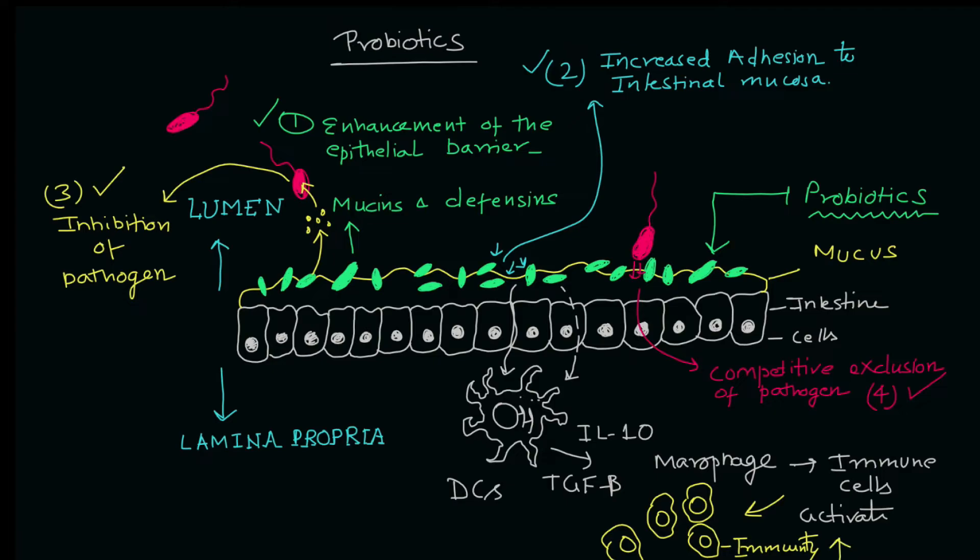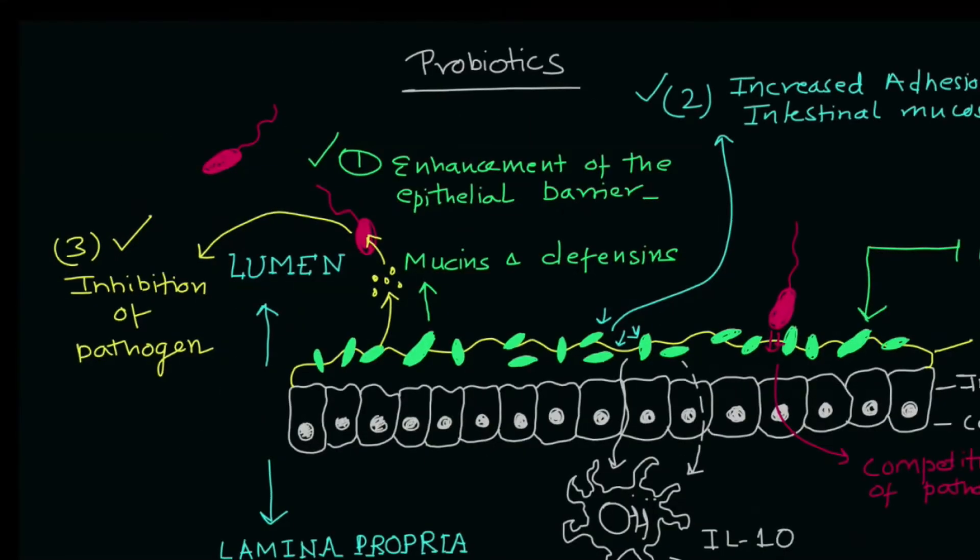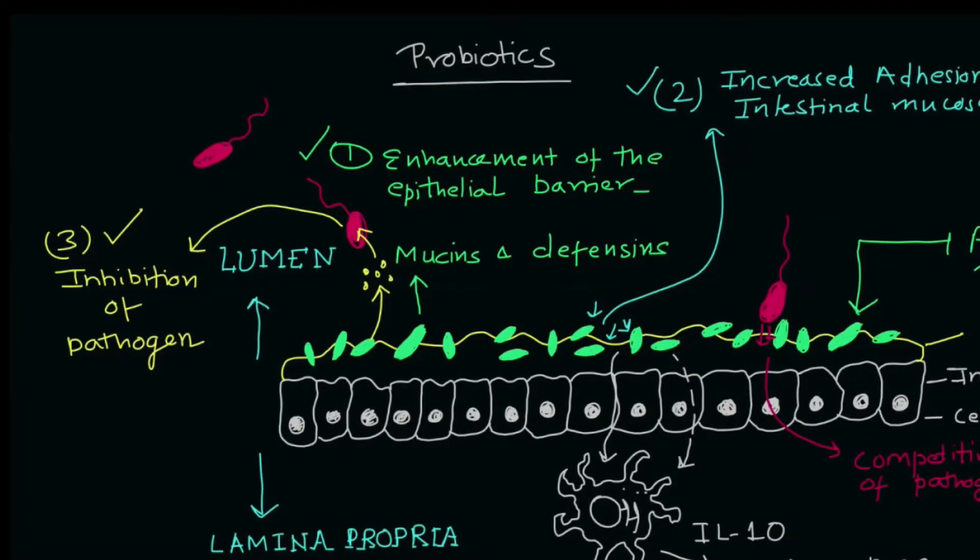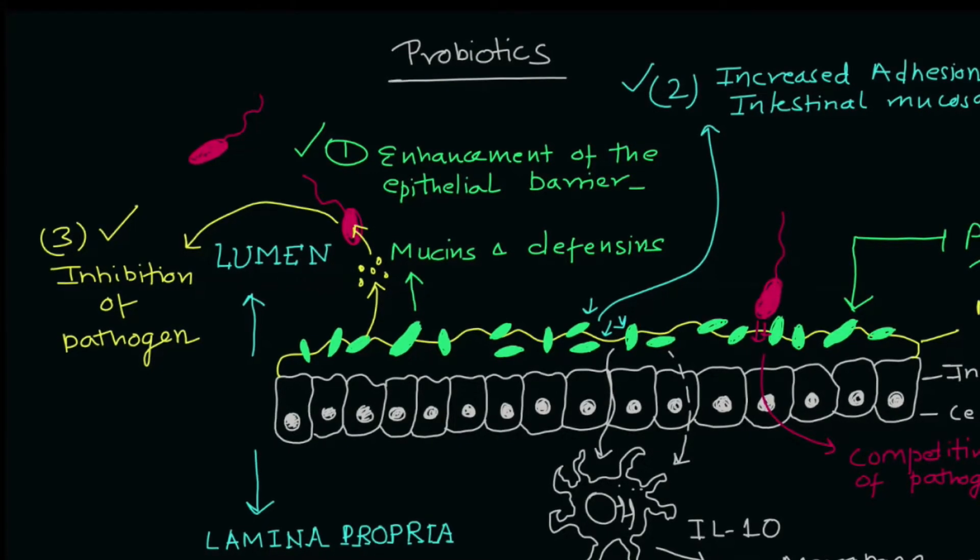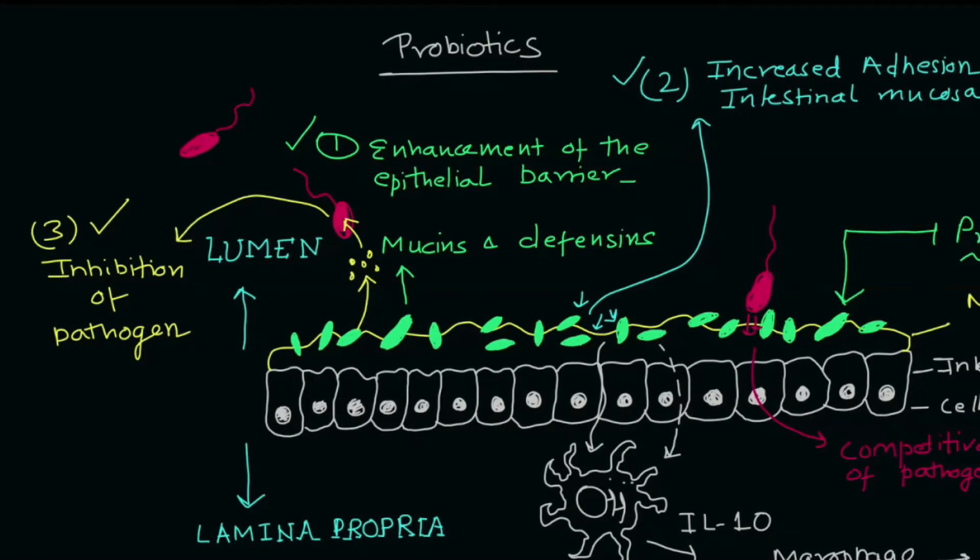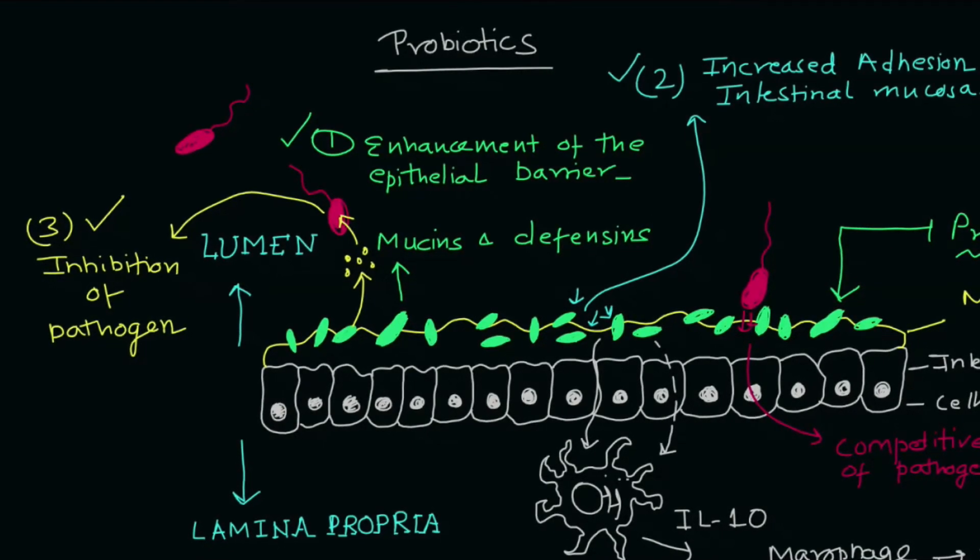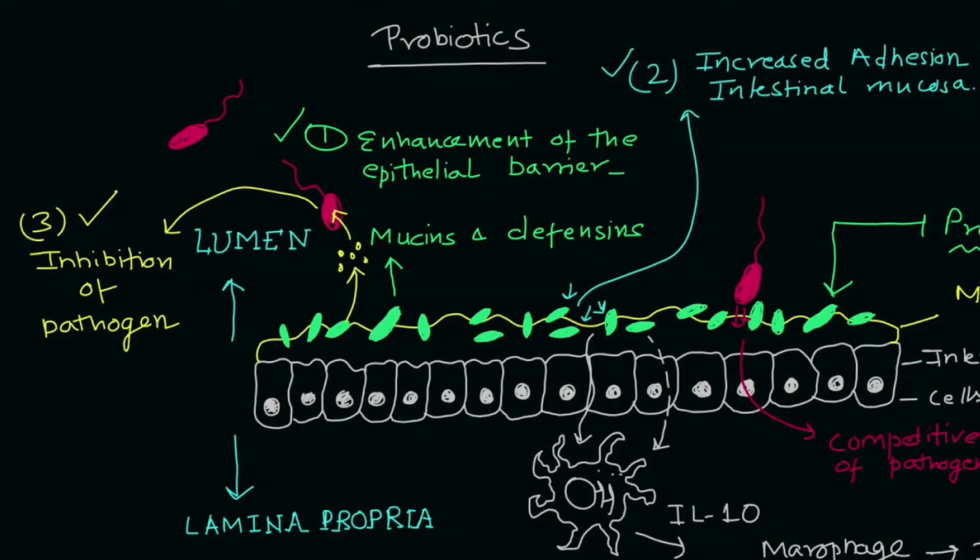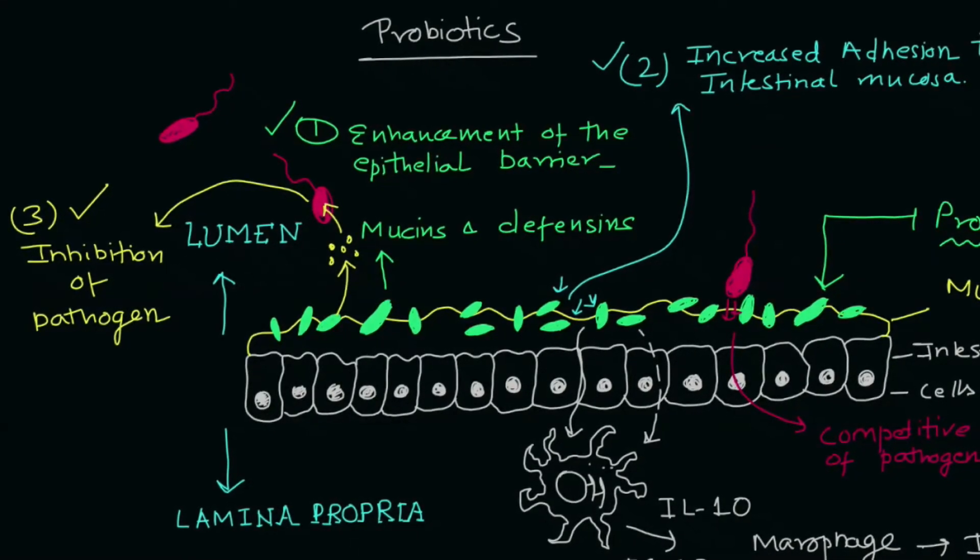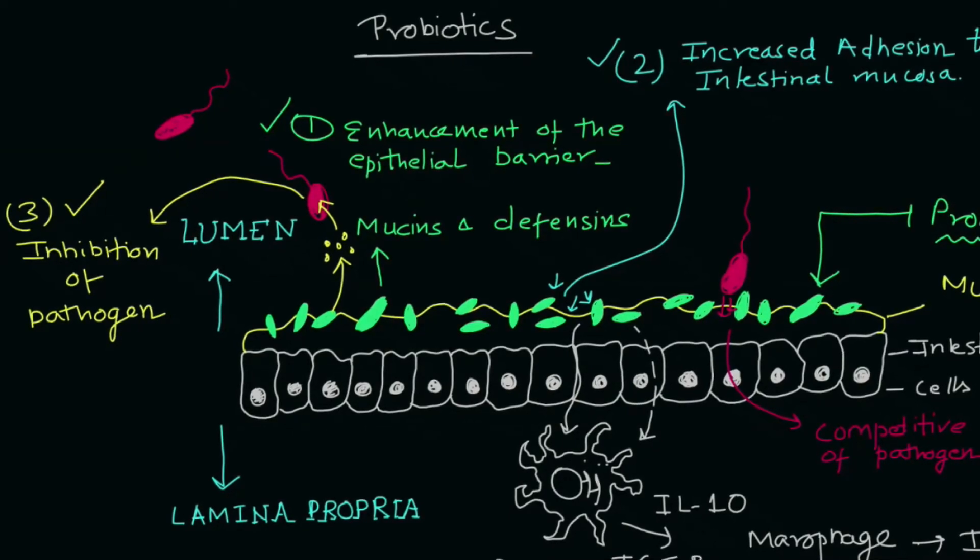So this is the detailed mechanism of action of the probiotics. I hope now you have a clear idea of the functions of probiotics where we have discussed the production of mucins and defensins. We have also discussed the inhibition of pathogenic organisms as well as competitive exclusion and the increased adhesion of beneficial microorganisms to the intestinal mucosa.